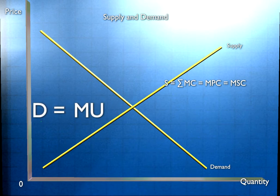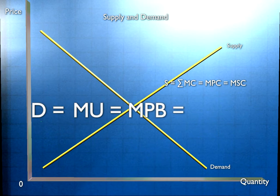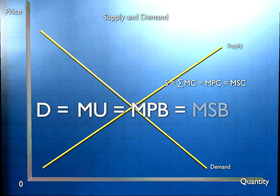So the demand curve reflects marginal utility, it reflects marginal private benefit, but it also reflects marginal social benefit.